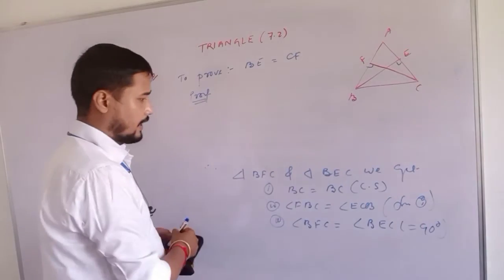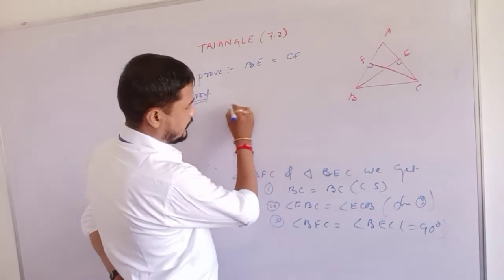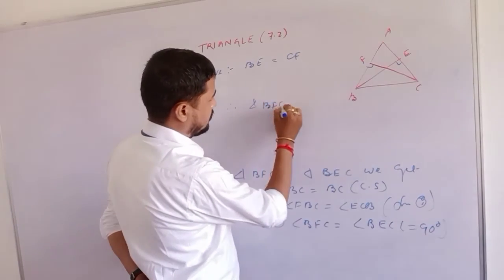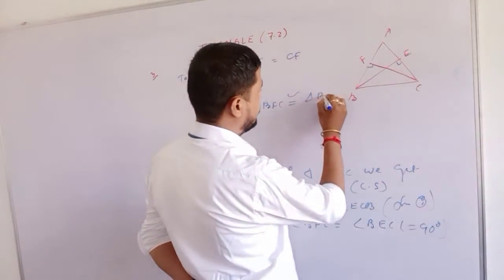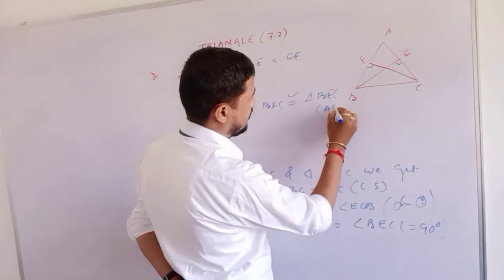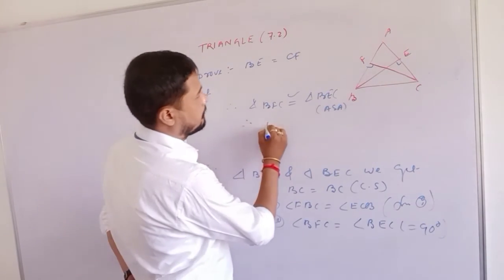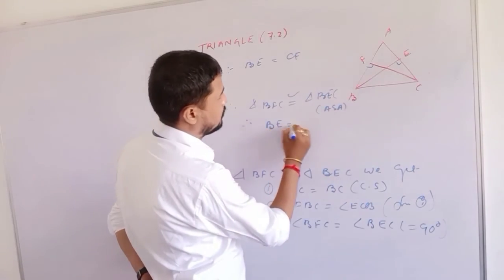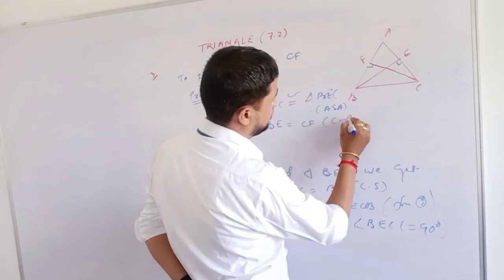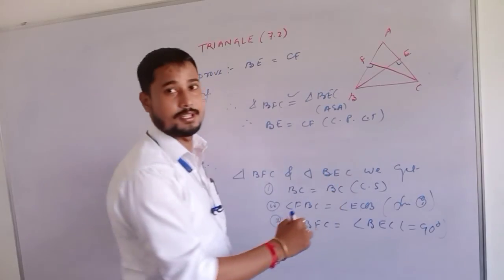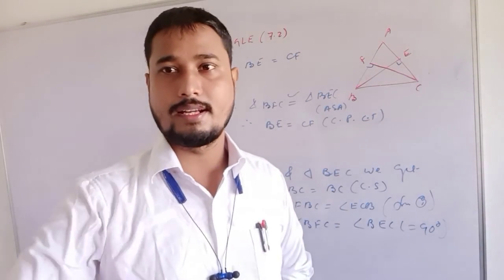We can write triangle BFC congruent to triangle BEC by Angle-Side-Angle. Now we can write that BE is equal to CF. Why? By CPCT - Corresponding Parts of Congruent Triangles.